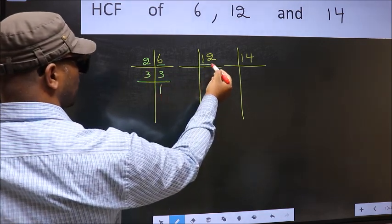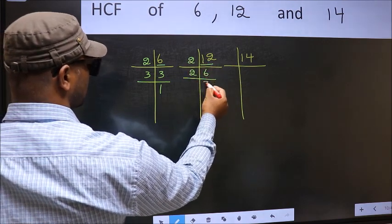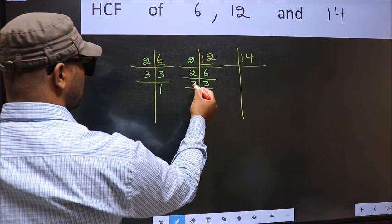Now the other number 12. 12 is 2, 6, 12. 6 is 2, 3, 6. 3 is a prime number, so 3 ones 3.